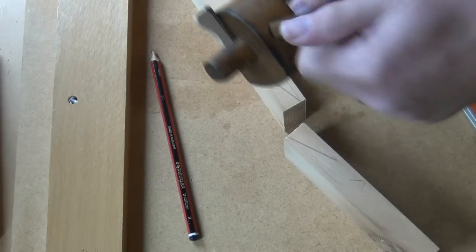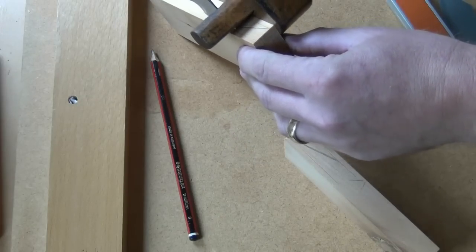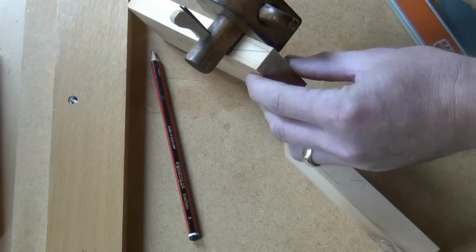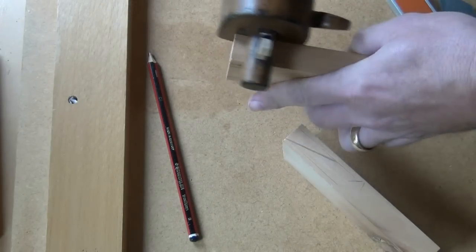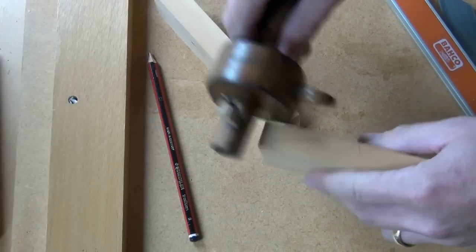Then I've adjusted the width of the marking gauge to approximately five-sixths of the width. Again marked from the face side, top and bottom of each component, and that's for the step on the other side.